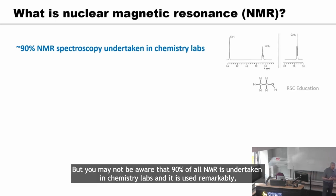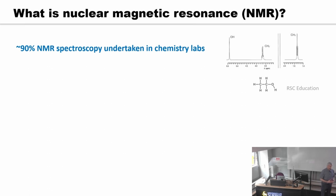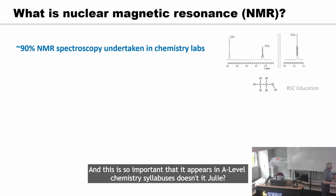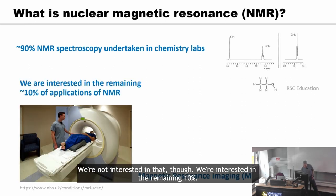Nuclear magnetic resonance is an extremely broad field, used widely in all sciences and engineering. You may not be aware that about 90% of all NMR is undertaken in chemistry labs, where it is used to identify the molecules that you have synthesized. This is so important that it appears in A-level chemistry syllabuses — but we're not interested in that.